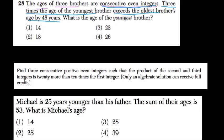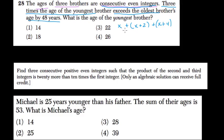The three ages of the brothers are consecutive even integers. For example, that could be 2, 4, 6, or any three even integers right after another. So their ages can be expressed as x for the youngest, plus the next brother's age will be x plus 2, plus the final brother's age will be x plus 4. Think about the numbers 2, 4, and 6 — you start with 2, add 2 to get 4, then add 4 to the original 2 to get 6.